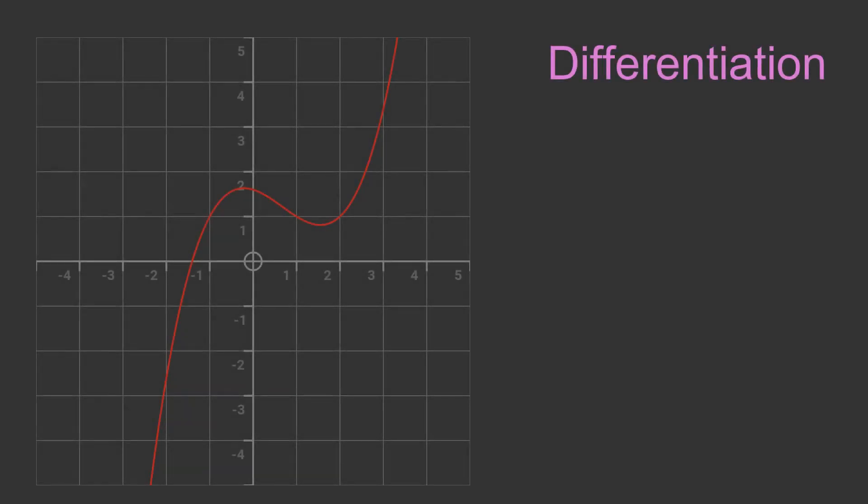For a mathematical function like this one, it is sometimes useful to know the slope of the curve. Differentiation is a method for finding the slope of a curve at any point.